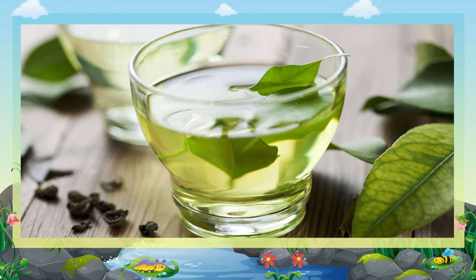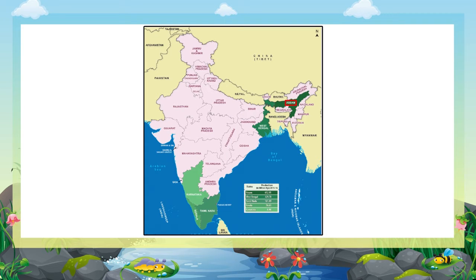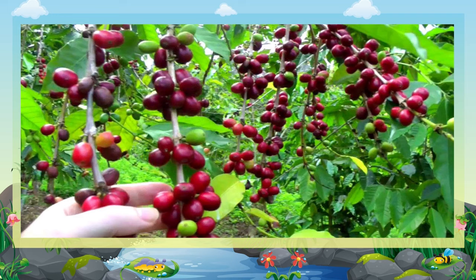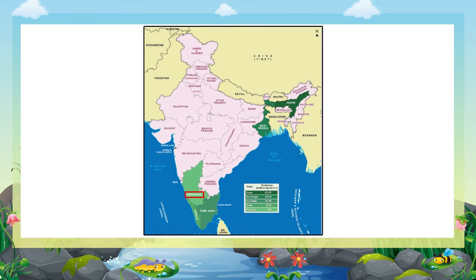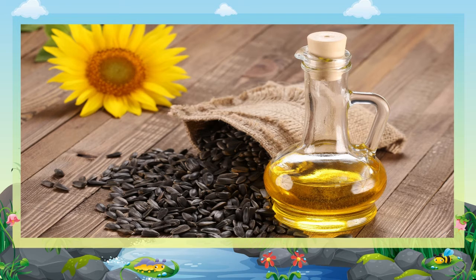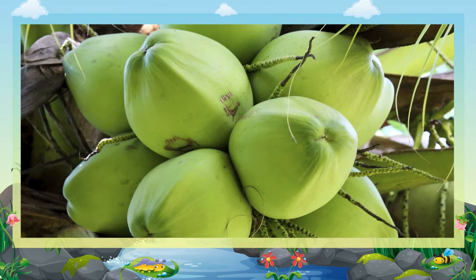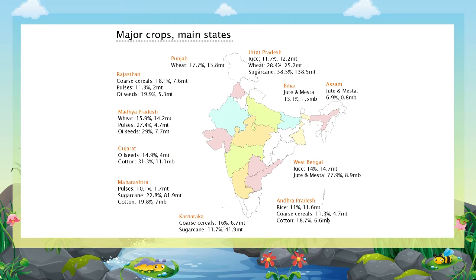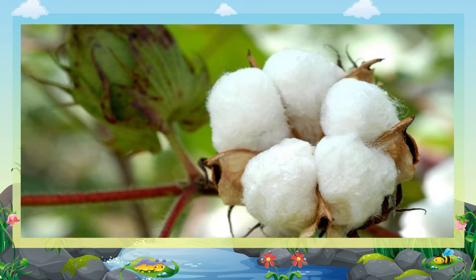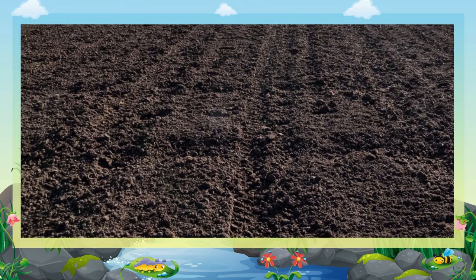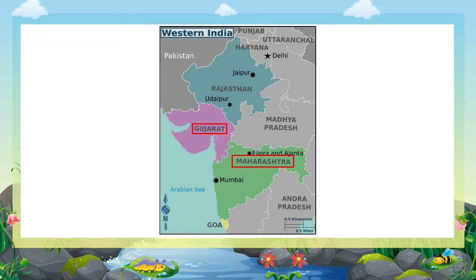Tea is the most popular beverage; it is grown mainly in Assam, northern parts of West Bengal, and the Nilgiri hills in south India. Coffee is mainly grown in Karnataka, Kerala, and Tamil Nadu. Oilseeds include groundnuts, sesame, till, mustard, coconut, linseed, etc., grown in different parts of India. Cotton is a fiber crop used for making cloth; it grows well in the black soils of Gujarat and Maharashtra. Madhya Pradesh, Punjab, and Tamil Nadu are other important producers of cotton.